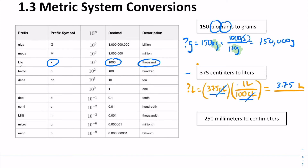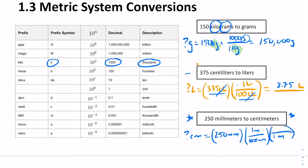Here's a challenge problem. I'd recommend writing out what you want to know and what you have. Convert to the base unit first — for example, 1,000 millimeters converts to 1 meter — and then convert from the base unit back to your desired units.